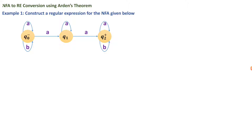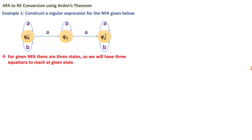This is a three-state non-deterministic finite automaton. It is non-deterministic because from state q0, which is also the starting state, there are two transitions for the letter 'a' — a self-loop and a transition to q1. For state q1 there is also a self-loop on 'a', and reading 'a' from q1 can also lead to state q2, which is the final state.